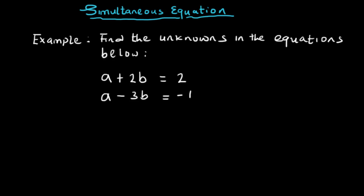Our first example: a plus 2b equals 2, and a minus 3b equals minus 1. Remember, the first thing you want to do is label the equations. This first example is what you do when you have a variable in equation 1 and equation 2 with equal coefficients.